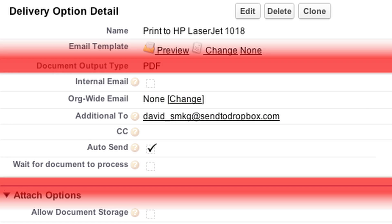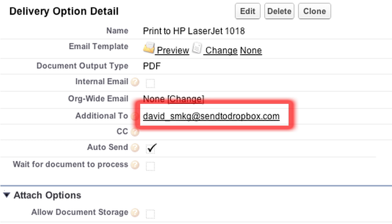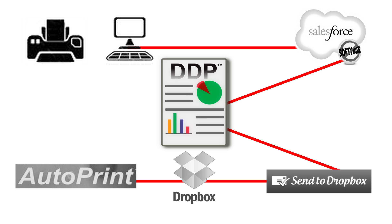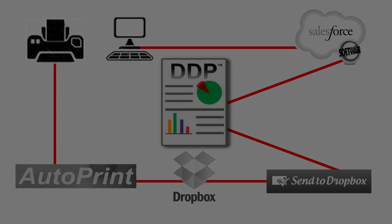Also, be sure to have the email delivered to the email address supplied by Sent to Dropbox. If you wish to automate the entire process so that a user only needs to click a single button to auto-print a document, you can use additional button parameters to specify the DDP and delivery options set up for this use case. This is not a requirement, just an option for additional automation.